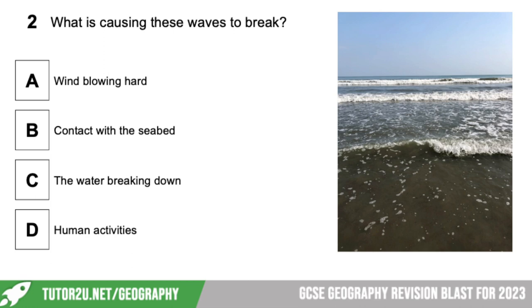We're going to do some multiple choice questions. We're missing question one, so we'll crack on with question two: what is causing these waves to break? Is it A — the wind blowing hard, B — contact with the seabed, C — the water breaking down, or D — human activity? It is B: contact with the seabed — friction is causing the waves to break.